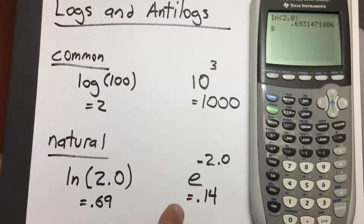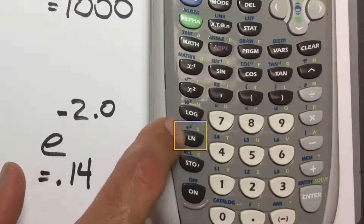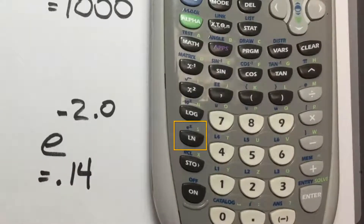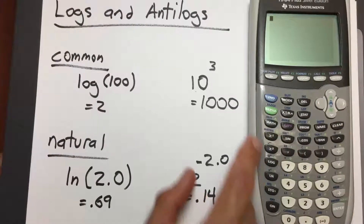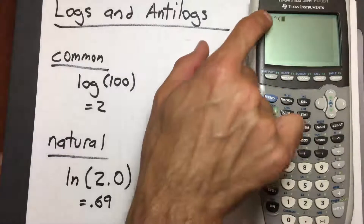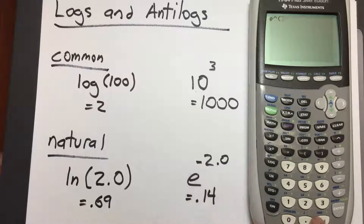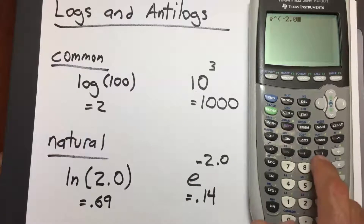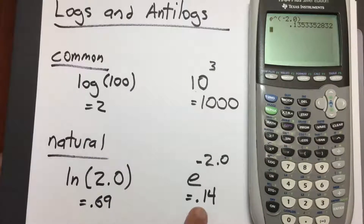To take the anti-natural log, or the e exponential, in the blue text right above LN there's a button that says e raised to the x. Clear the screen, press 2nd, then press the natural log key, and we have e raised to something. Enter the number negative 2.0, close the parentheses, and press enter. Our answer is 0.135, which I've rounded to 0.14 — exactly what we expected.